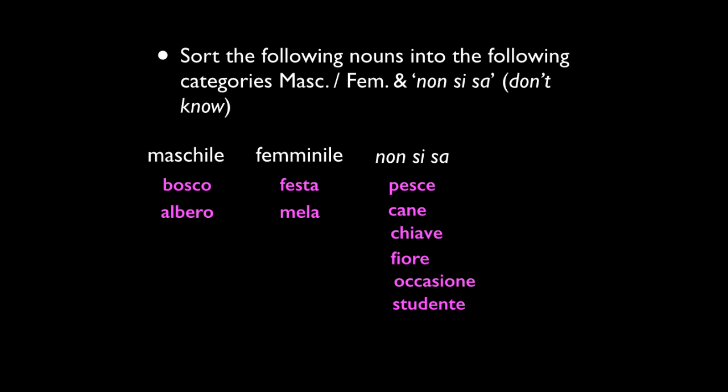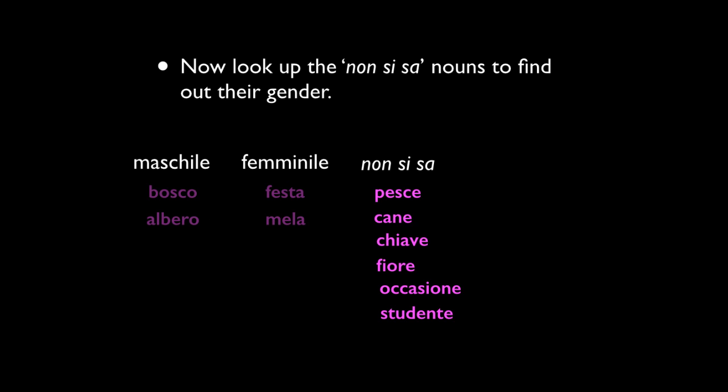The next thing that you have to do is look up the non si sa words. Where is pesce, where is cane? If they end in -e and they're singular, you have no idea what their gender is. So go find a dictionary or look them up online, and when you're done, come on back and I'll tell you where these go.